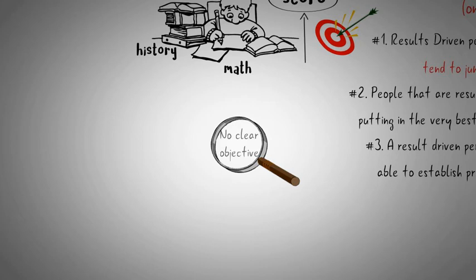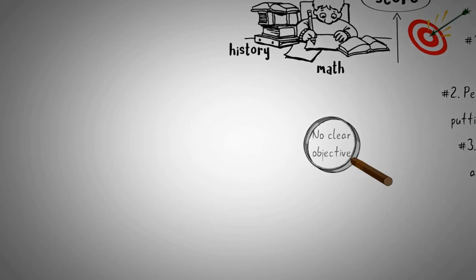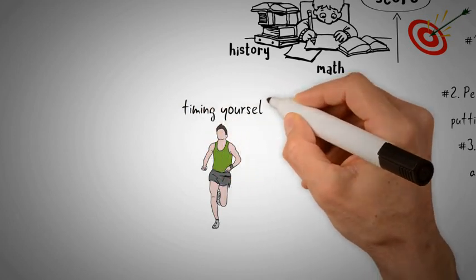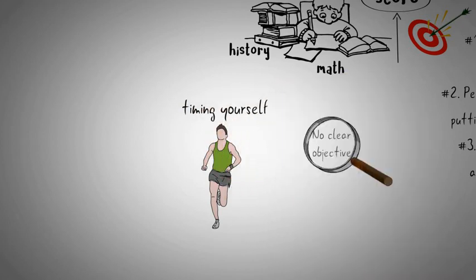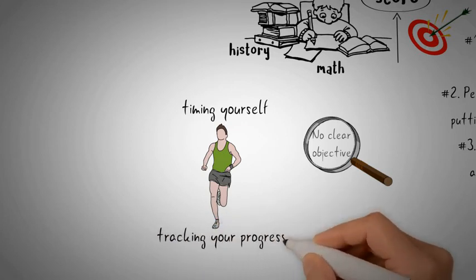Something as simple as progressively logging your daily runs and timing yourself each day in order to beat your own timing the next time around is more effective than running daily without tracking your progress.